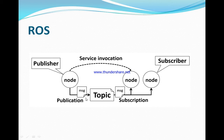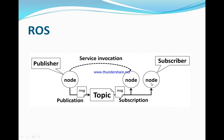In ROS, whichever node is publishing is called a publisher. For example, a keyboard or sensor that is sending a message is called a publisher, and whoever is receiving the message is a subscriber. The medium of communication between them is called a topic. So: one publisher sends a message, a subscriber receives the message, and the medium is the topic. Through messages you can invoke services on the subscriber — for example, the subscriber controls a wheel, and you send a command to run the wheel.